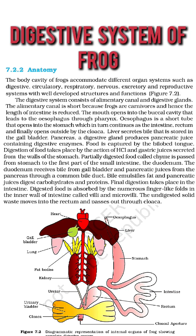Partially digested food called chyme is passed from the stomach to the first part of the small intestine, the duodenum. The duodenum receives bile from the gallbladder and pancreatic juices from the pancreas through a common bile duct. Bile emulsifies fat and pancreatic juices digest carbohydrates and proteins. Final digestion takes place in the intestine.